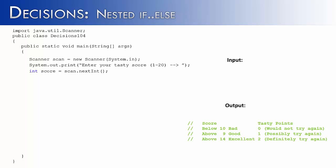Let's say you're going through your cookbook and trying to determine whether you like certain recipes. You're going to score each one as you eat it. If the tasty score is below 10, it's bad. If it's above 9, it's good. If it's above 14, it's excellent. A numeric score is associated with each: 0 for bad, 1 for good, and 2 for excellent.